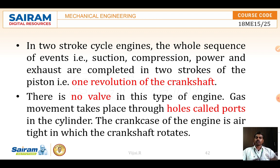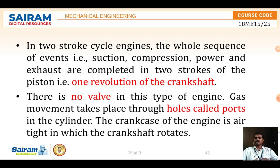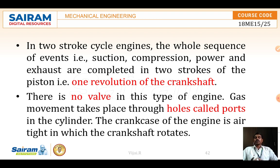Before discussing the strokes, we should know the parts of the IC engine. The main parts are the cylinder and the piston — the piston moves inside the cylinder. The piston is connected to the crankshaft through a connecting rod. When the crankshaft rotates, the connecting rod pulls the piston downward and pushes it upward. So because of crankshaft rotation the piston moves up and down, and conversely, the piston movement causes the crankshaft to rotate.